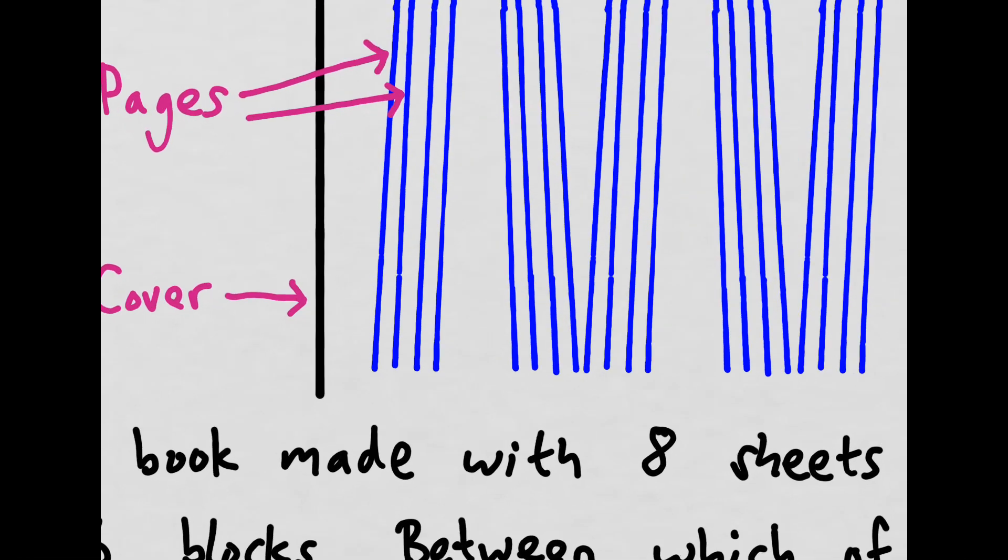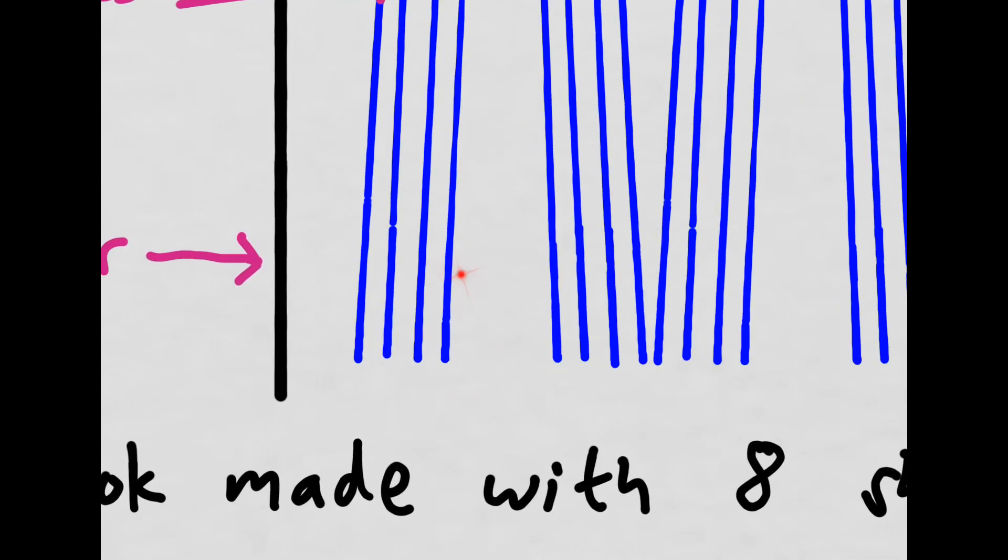So if we zoom in, what page is this in the original book? So if each of these pages is double-sided, so we go 1, 2, 3, 4, 5, 6, 7, 8. So we know this inside page of this gap is page 8.